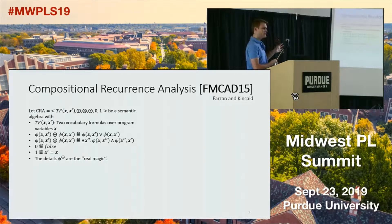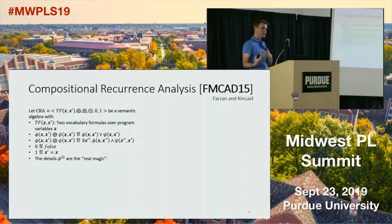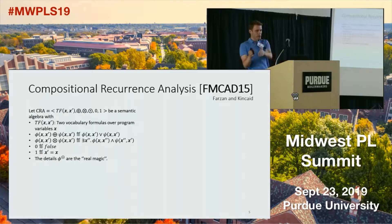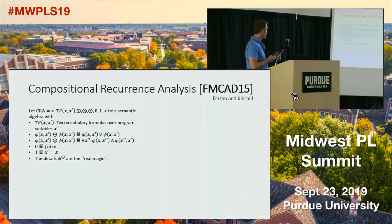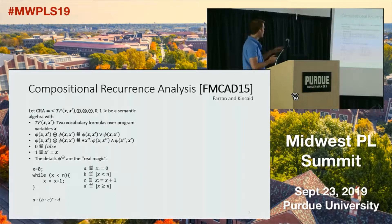CRA builds summaries from two-vocabulary transition formulas over program variables x. Each program variable has two copies: a primed version for the post-state and an unprimed version for the pre-state. The combine operator is logical disjunction. The sequencing operator introduces a double-prime variable: take phi to x-double-prime, then psi from x-double-prime to x-prime. Zero is false, one is the identity. The star operator is where the most interesting things happen, but for this particular example it's not too complicated.